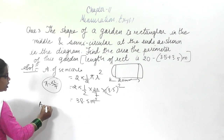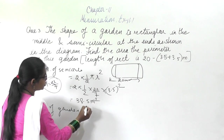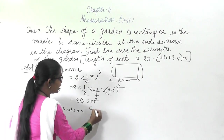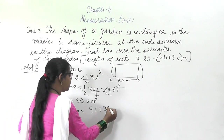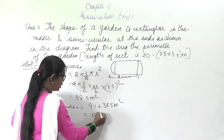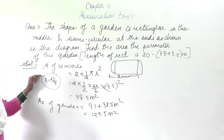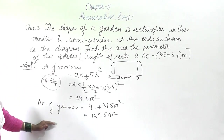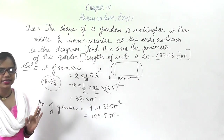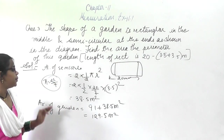Now we have to find the total area of the garden, which will be 91 plus 38.5 meter square. Since the question is also asking to find the perimeter, we have found the area. Now what do we have to find? The perimeter.